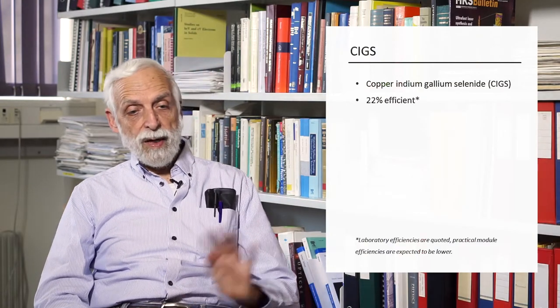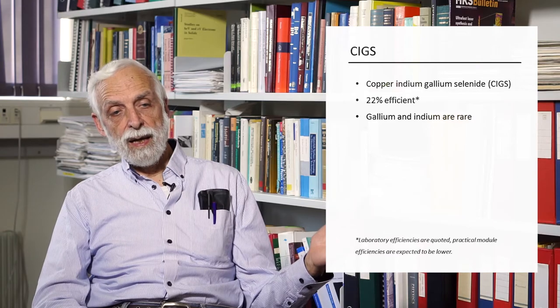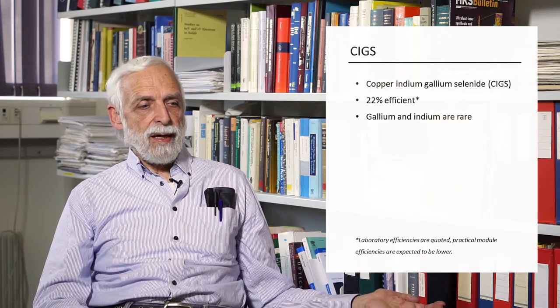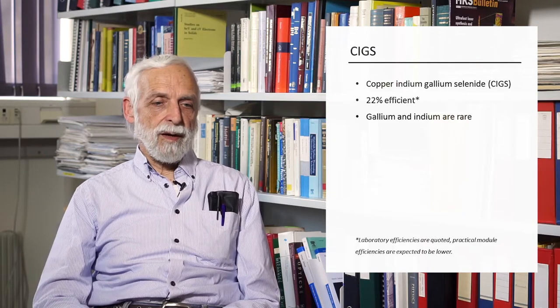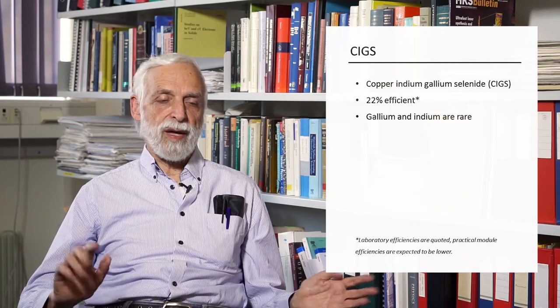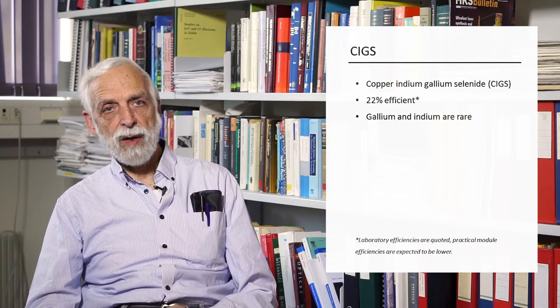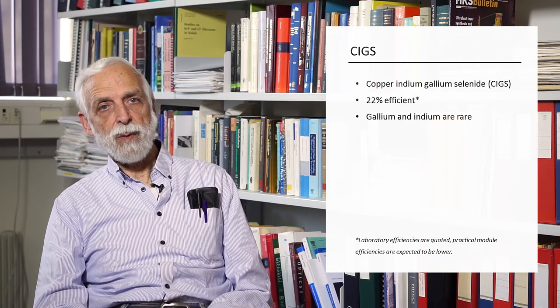The main problem with CIGS, which is otherwise promising, is that we need indium and gallium. Gallium is a rare metal — a byproduct of aluminum processing — and it does not exist as a pure metal, always appearing as an oxide, making it difficult to produce. Indium is also a problem: there is only a limited amount available in the earth's crust, and indium is critically important in many other applications, such as cell phones, where a transparent conductive layer is needed. So it is not clear if enough indium can be provided for these cells to be widespread. It is a well-working cell you can buy, but if it is going to be truly widespread, there simply won't be enough indium.